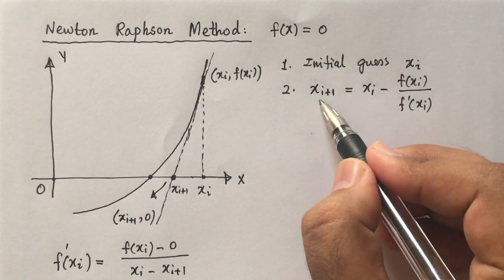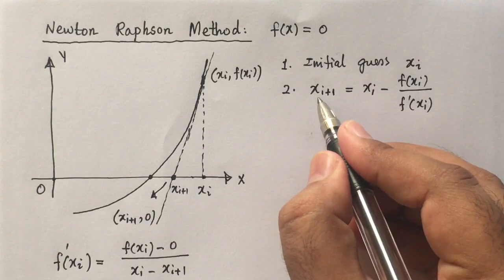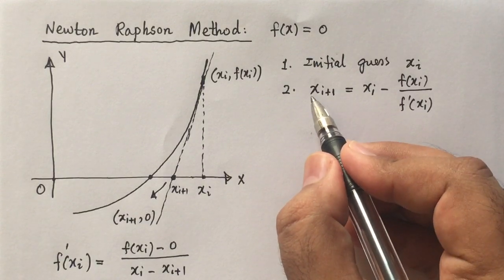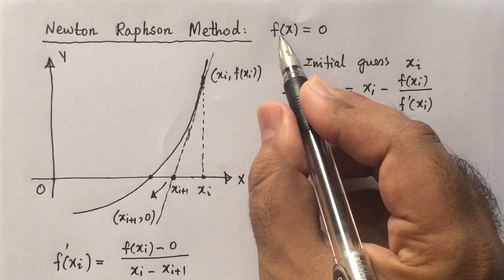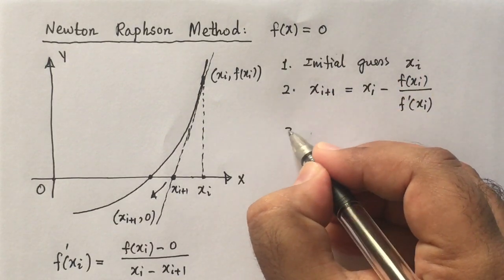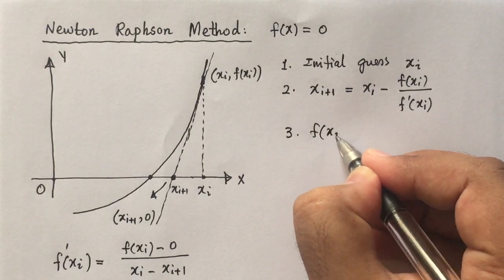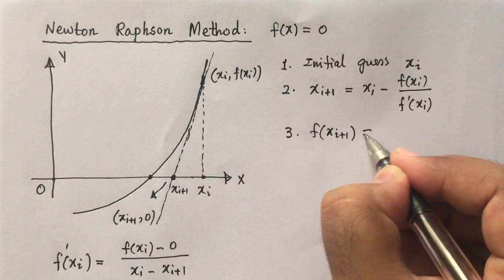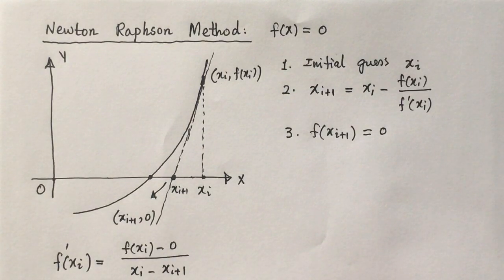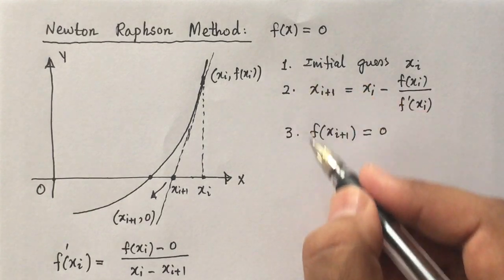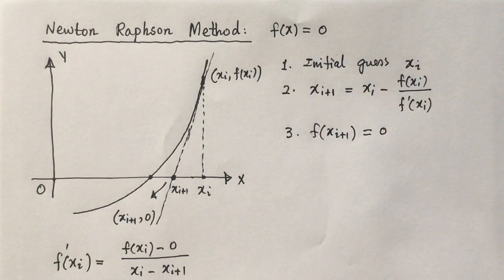Once we have found xi+1, we check whether it is the required solution. If xi+1 is the required solution, then f(xi+1) must equal 0. In the third step we check whether f(xi+1) = 0. If it is 0, then xi+1 is our solution. If not, we repeat these three steps and continue the iteration process until we get the required solution.